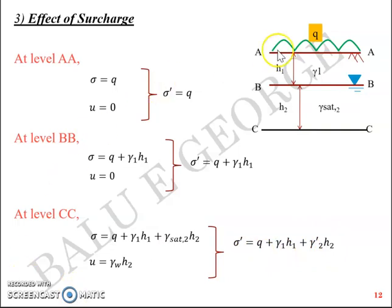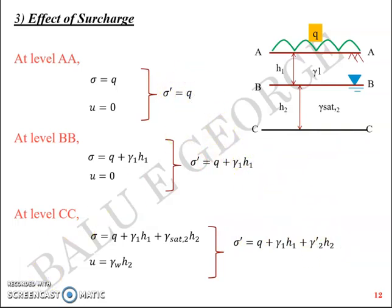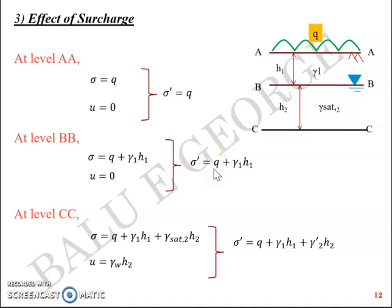In short, when you have a surcharge q, it adds to the effective stress at each level: q at AA, q plus gamma_1*h1 at BB, and q plus gamma_1*h1 plus gamma_dash_2*h2 at CC. One thing to be careful about is the unit of q — it must be consistent with gamma*h. Since gamma is in kN/m³ and h is in meters, the stress term has units of kN/m², so q should also be in kN/m², or equivalently in kilopascals.